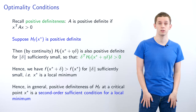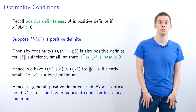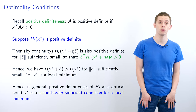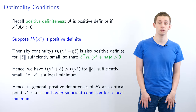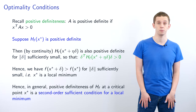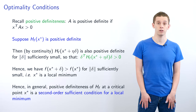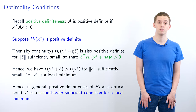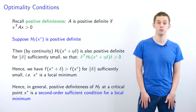Recall that a matrix A is positive definite if for all non-zero vectors x, x^T A x > 0. If Hf(x*) is positive definite, then by continuity, Hf(x* + ηδ) will also be positive definite for sufficiently small δ, and therefore δ^T Hf(x* + ηδ) δ > 0. Hence f(x* + δ) > f(x*) for sufficiently small δ, and x* is a local minimum. In general, positive definiteness of Hf at a critical point x* is a second-order sufficient condition for a local minimum.